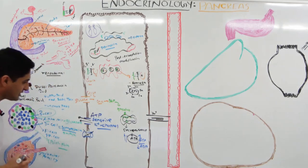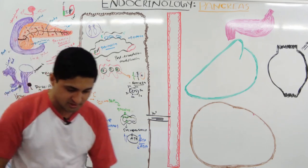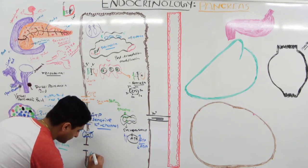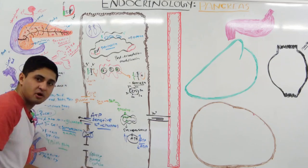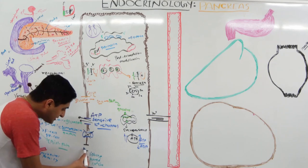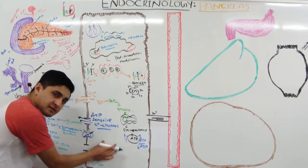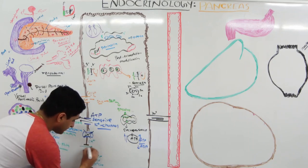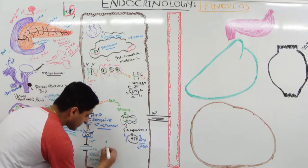When the cell becomes more positive and depolarizes, voltage-gated calcium channels open up. These channels sense the increased voltage and allow calcium to rush in, raising intracellular calcium levels.